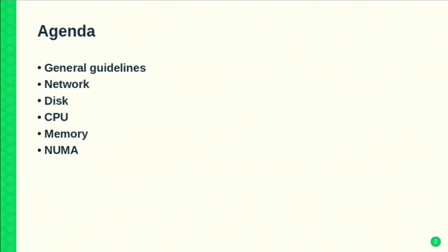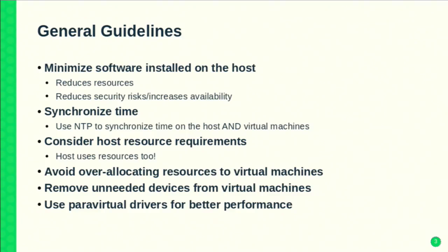In this talk I'm going to be using a lot of libvirt domain XML snippets to describe some of these tuning configurations. Hopefully everyone has seen that or is at least a little bit familiar with it — if not, some basic familiarity with XML should suffice. There's a lot of stuff to cover, so to make it comprehensible I've broken it into the four classic subsystems with a little bit of NUMA thrown in at the end. We'll start off with some general recommendations that don't fit into those other categories.